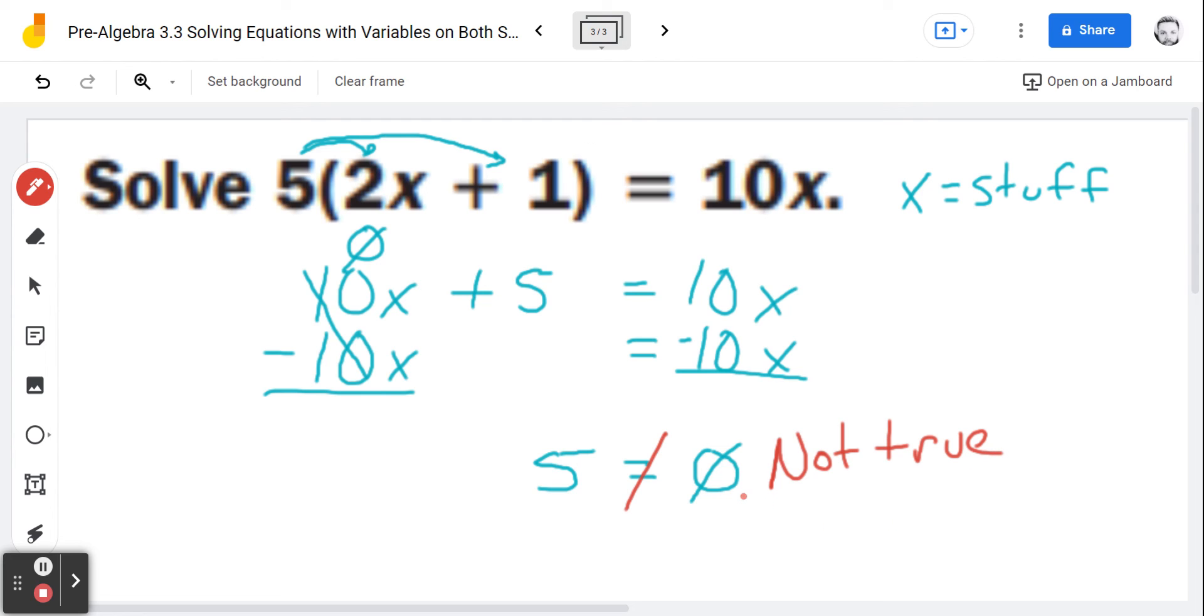So this is not true. And whenever you get a statement like this, 3 equals 7, 10 equals 13, and it's not true, that means it has no solutions. Which happens sometimes. Sometimes we have an equation that we can't get a value for x that makes the statement true. So we say it has no solutions.